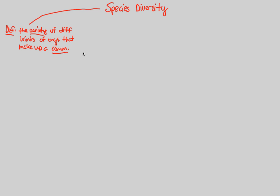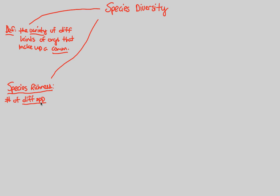There are a couple of components that make up species diversity. The first component is species richness. When we look at species diversity within a community, we define species richness as the number of different species that live within a community. This is a true, concrete number — a hardcore number to work off of.